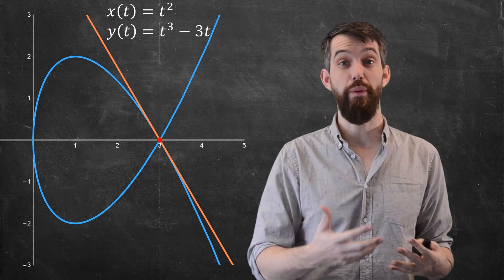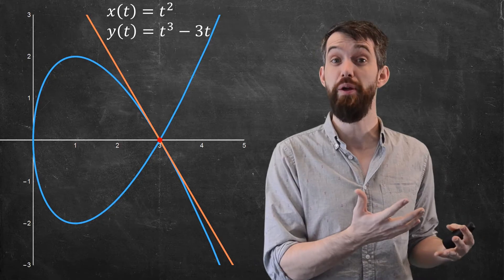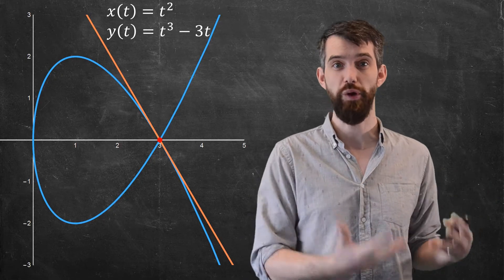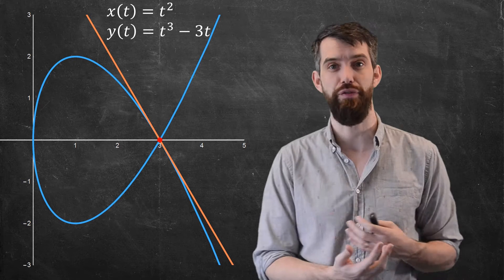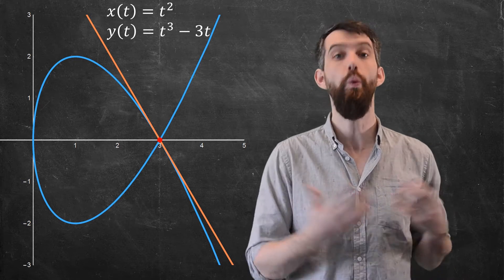This is a richness that occurs for parametric curves, but didn't occur when they were all written y as a function of x, where they had to pass a vertical line test. This clearly is going to fail a vertical line test. So what can we do?